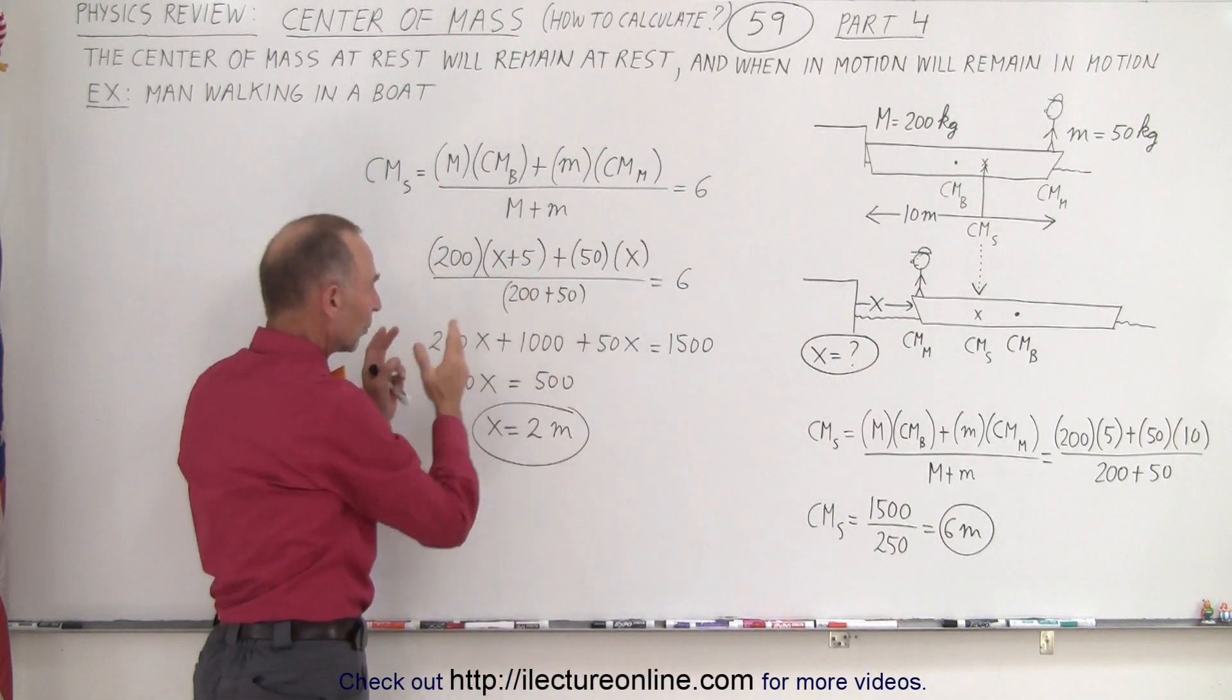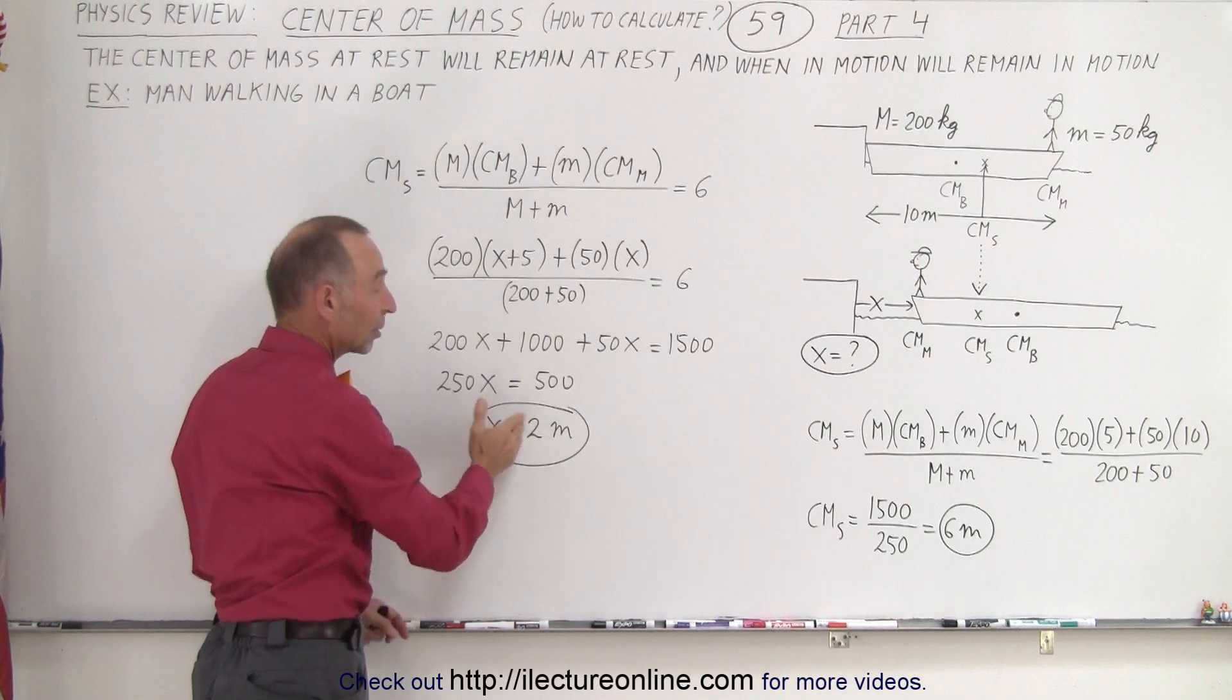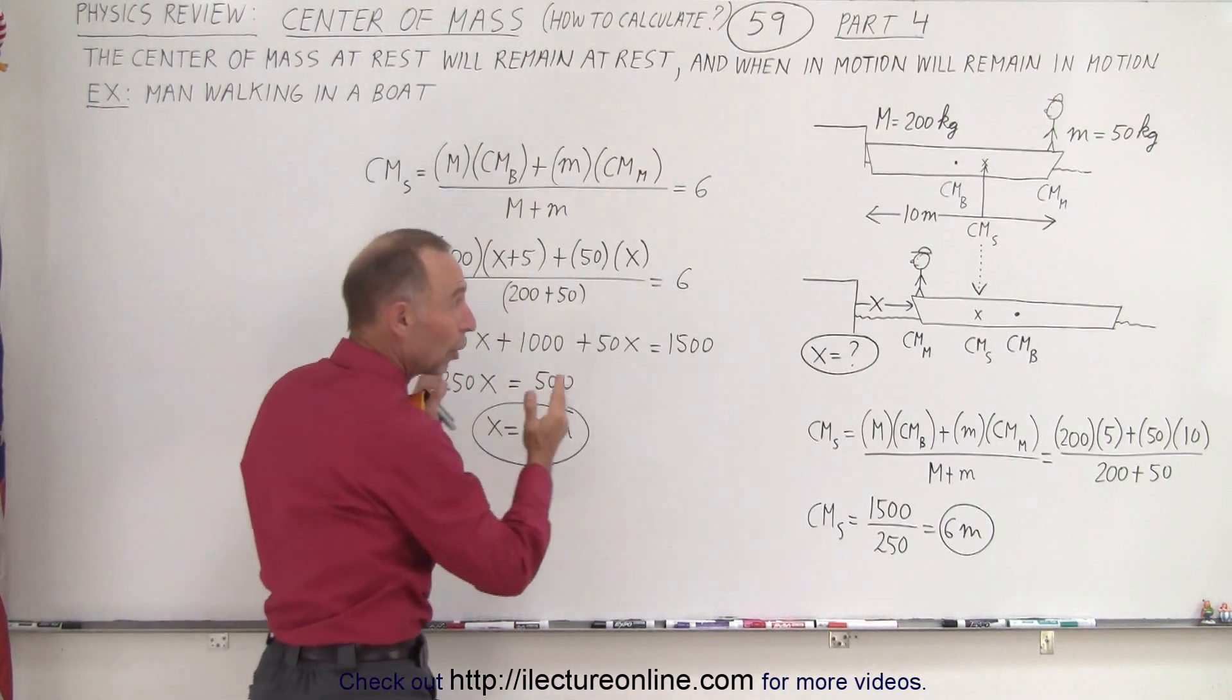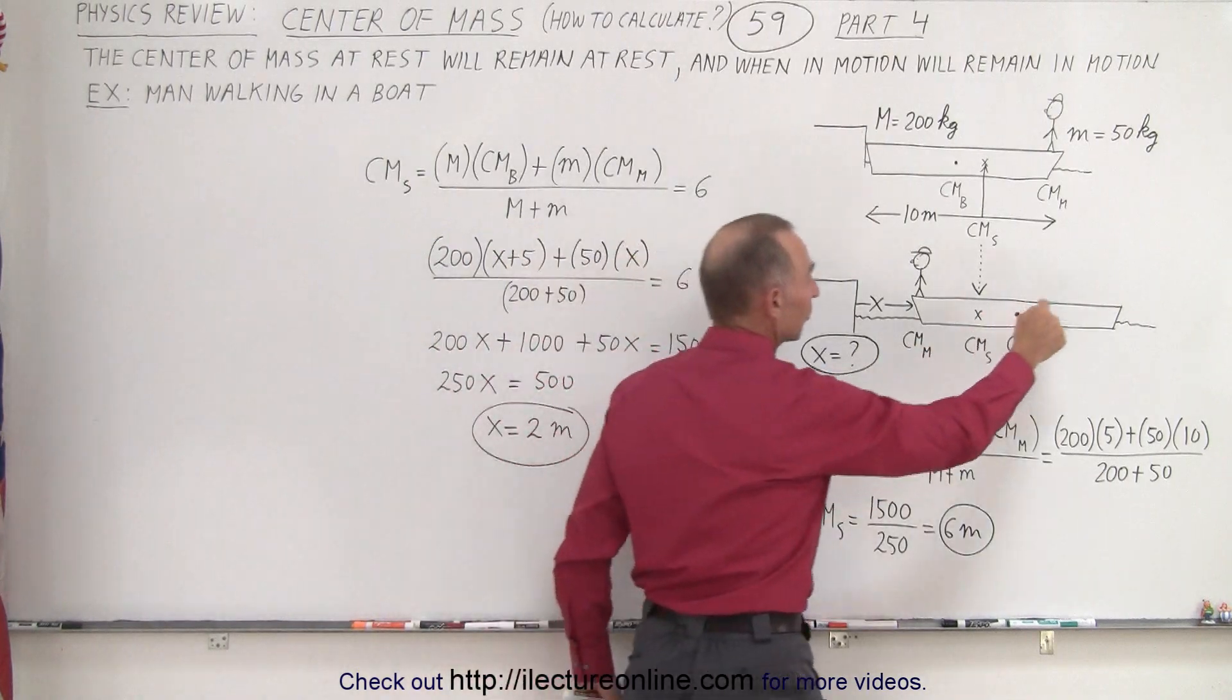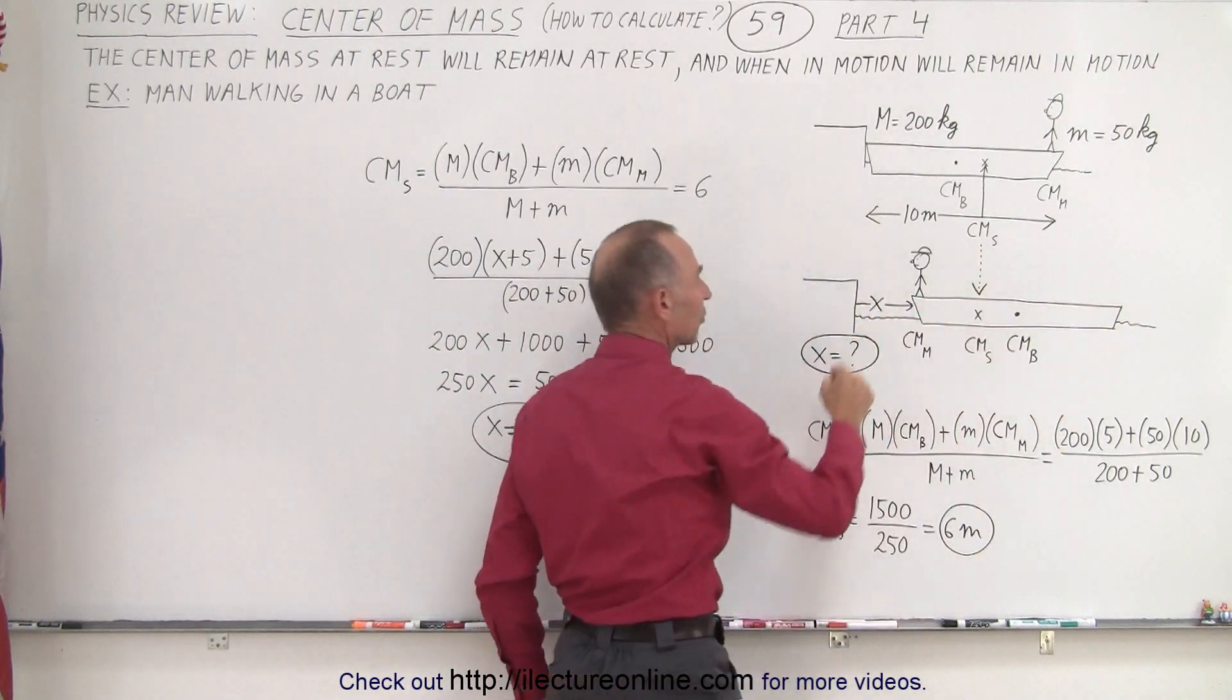When we plug all that in and solve for x, we see that x equals 2 meters, which means that the boat has now moved 2 meters as a result of the man walking across the boat.